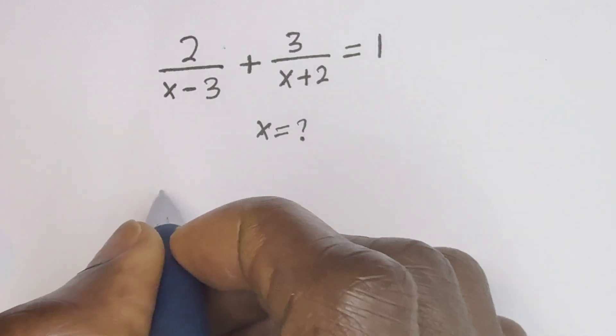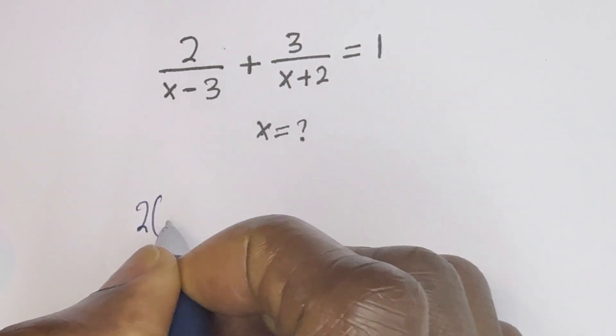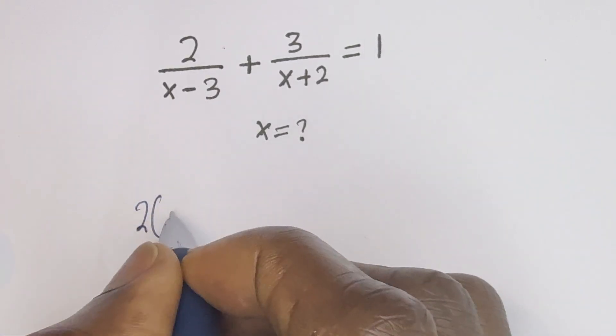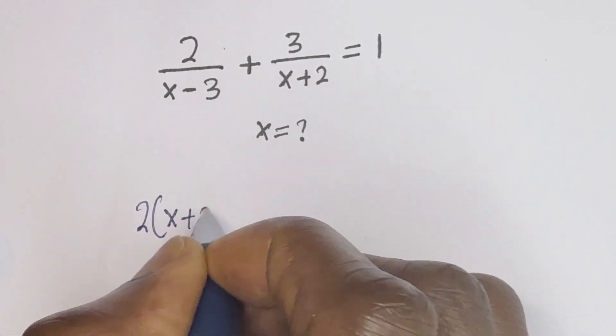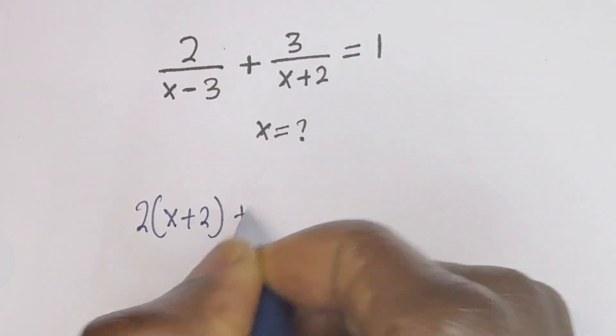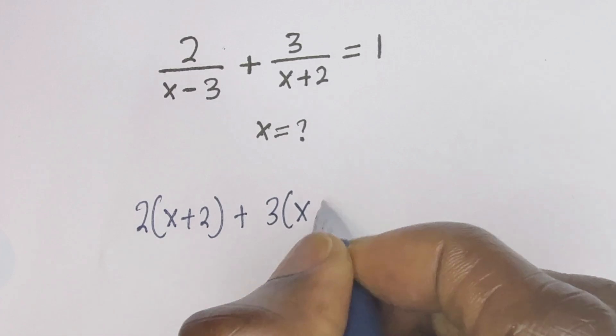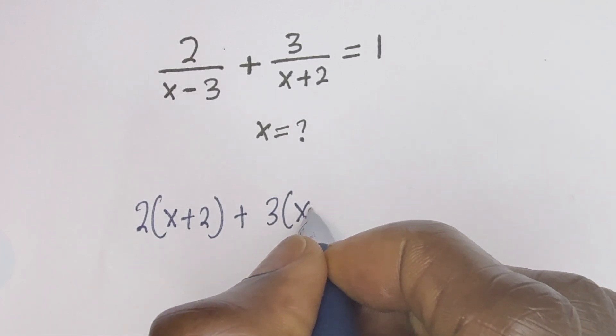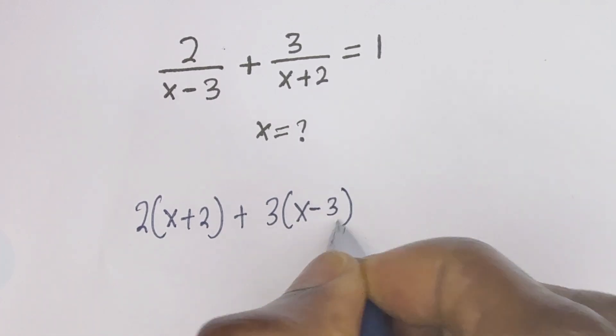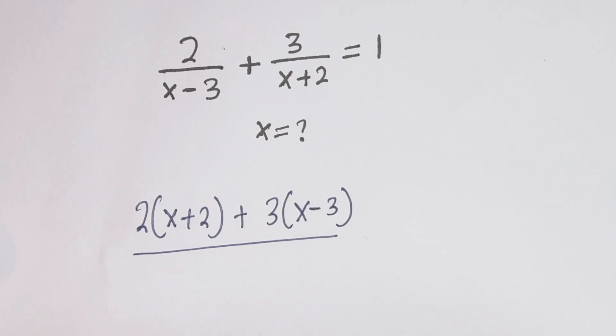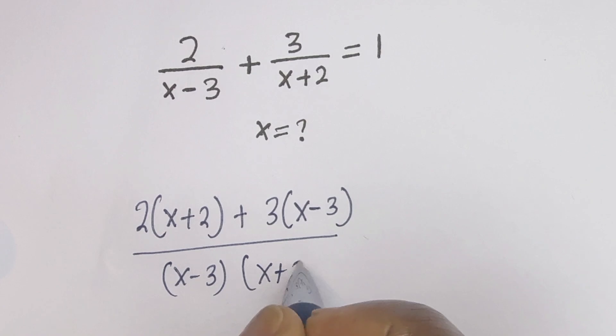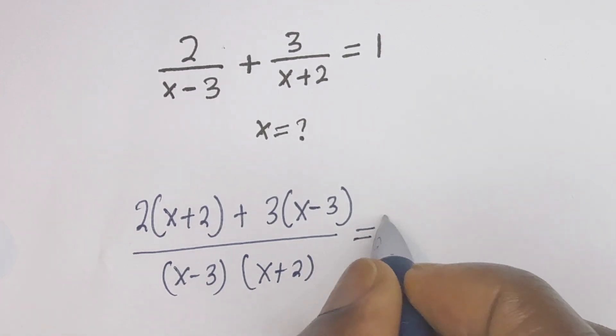That is, we have 2 bracket x plus 2 plus 3 bracket x minus 3 divided by x minus 3 bracket x plus 2. This is equal to 1.